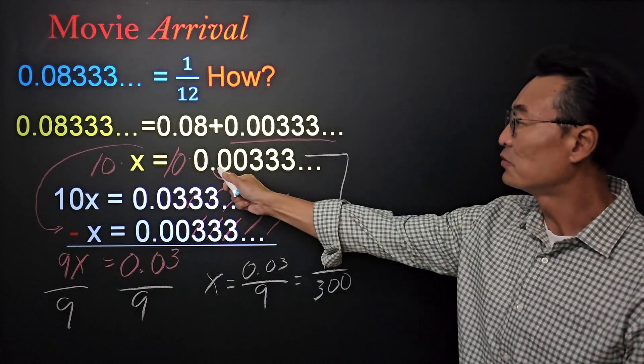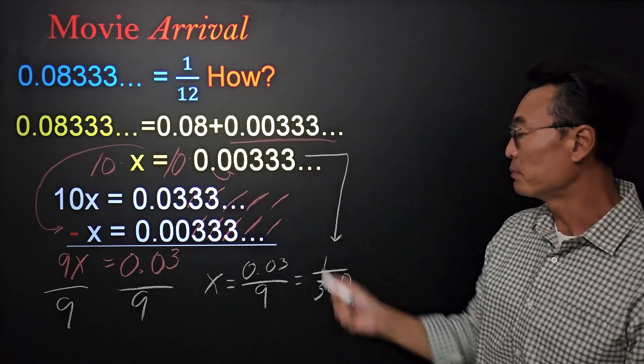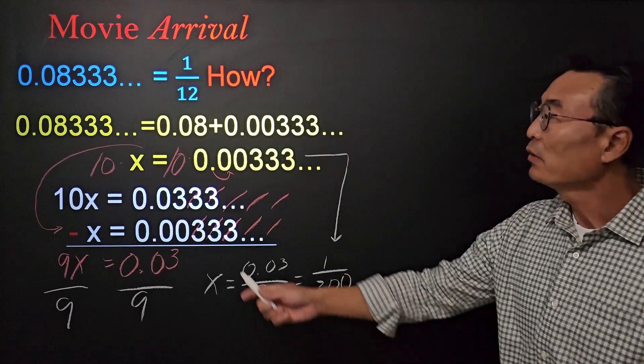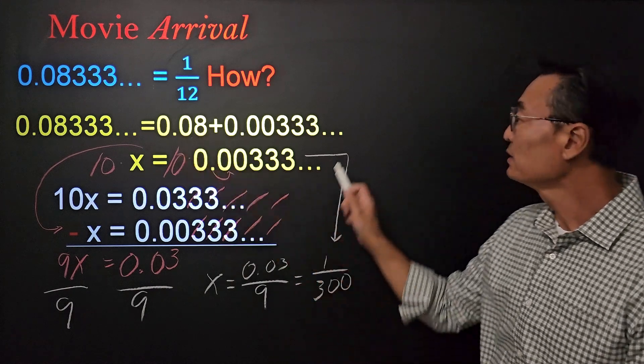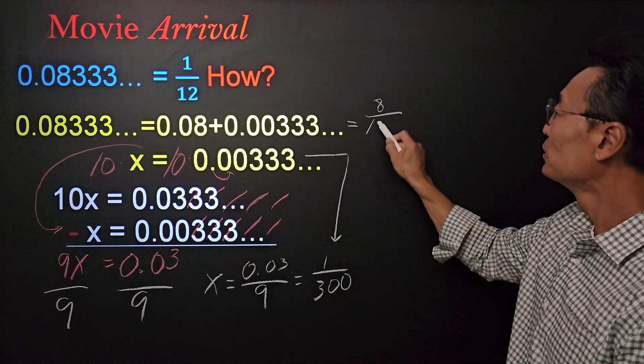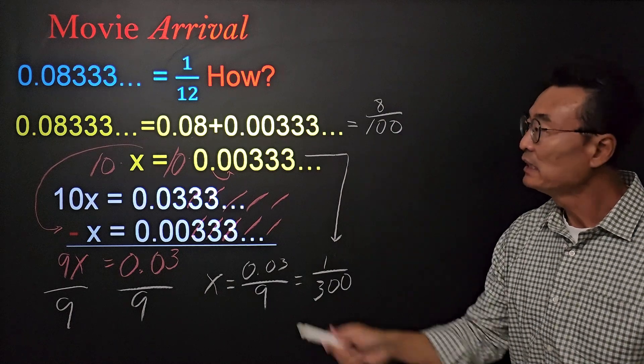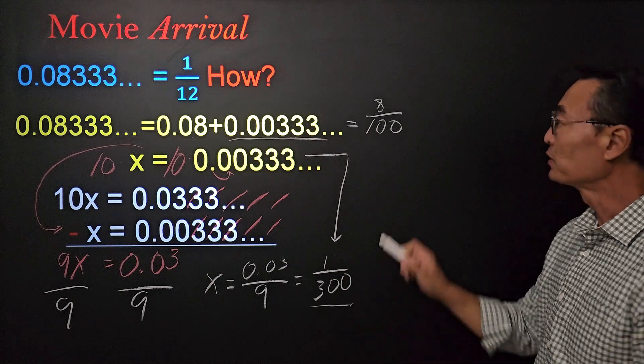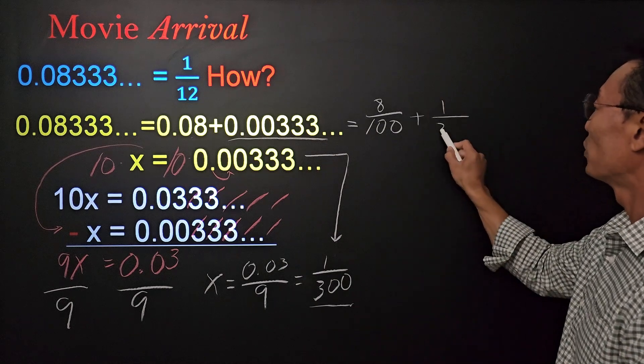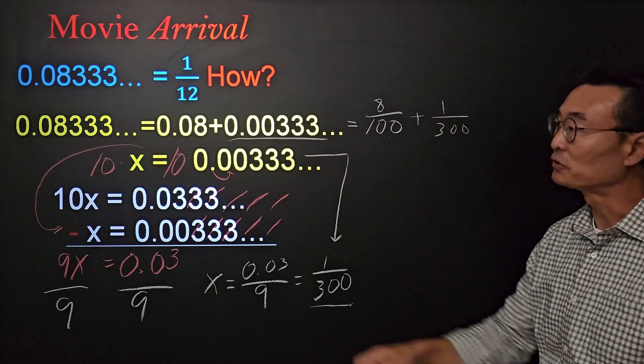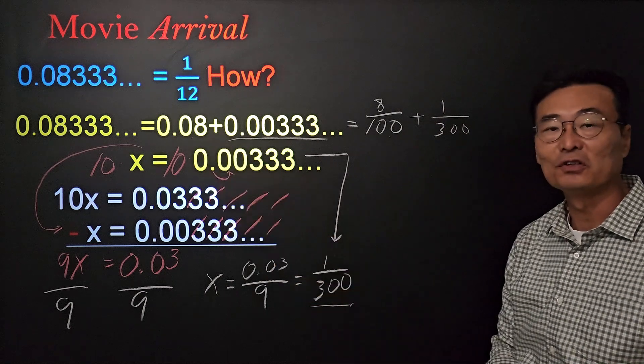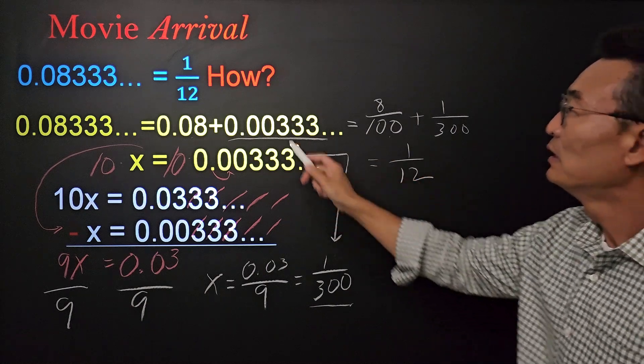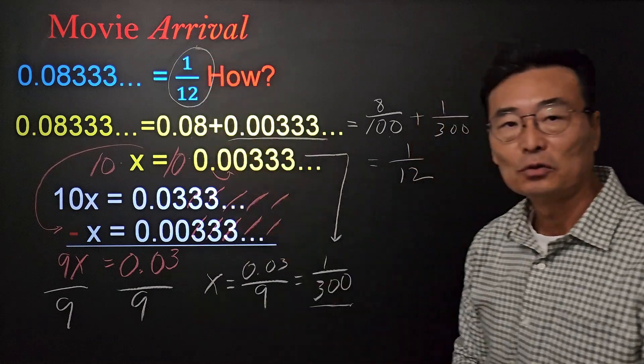Now we have 0.08 as a fraction, which is 8 over 100, and 0.003 repeating, we found out to be 1 over 300. So we're going to add the 1 over 300 to the 8 over 100, which again is equal to 0.08, and this will equal 1 over 12, which is the answer.